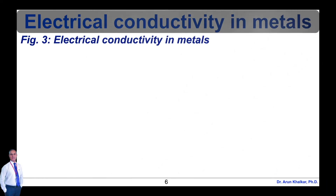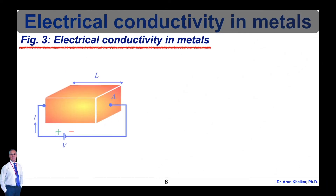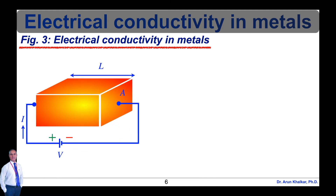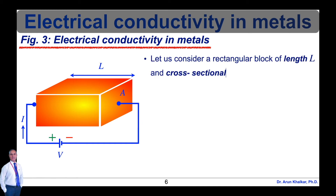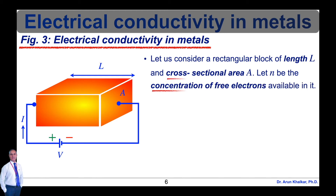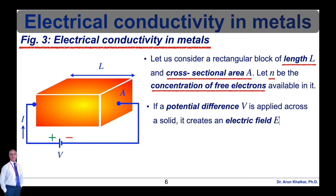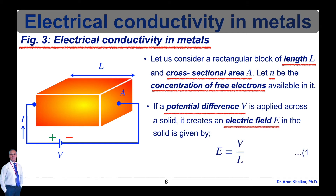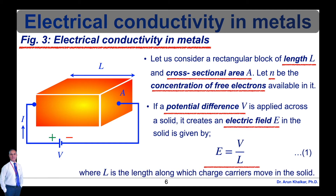Now let's understand electrical conductivity in metals with the help of a diagram shown in figure 3. The conductivity of a material can be related to the number of charge carriers present in the material. Consider a rectangular block of length L and cross-sectional area A. Let n be the concentration of free electrons in it. If a potential difference V is applied across the solid, it creates an electric field E given by E = V / L, where L is the length along which charge carriers move. This is equation 1.